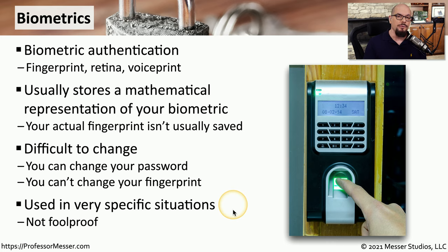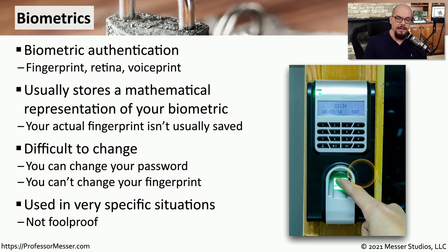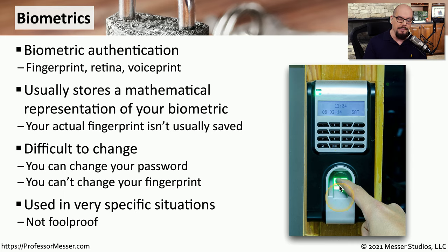These biometrics are powerful physical controls, but they aren't foolproof. We very commonly combine biometrics with some other type of authentication. This particular biometric system requires you to put in a biometric fingerprint and then also include a personal identification number. The secondary bit of authentication makes sure that the person providing the biometrics is the person who really should gain access into that room.